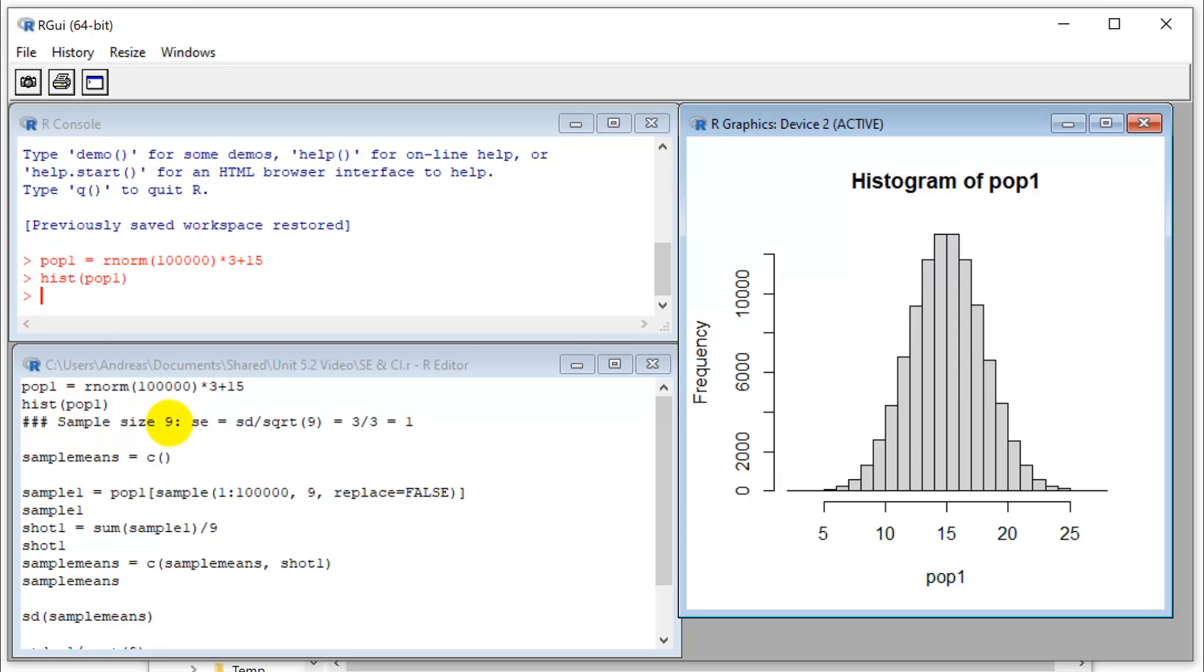And let's take a sample size of 9, because that makes the math real easy. So the expected standard error, if our formula is right, that would be the standard deviation divided by the square root of 9. So 3 divided by 3 is 1.